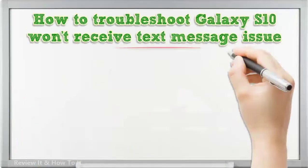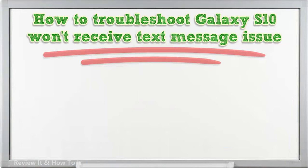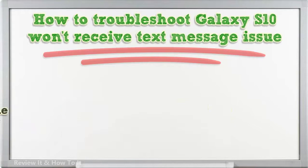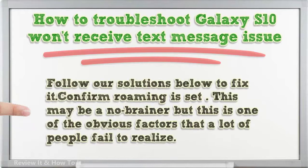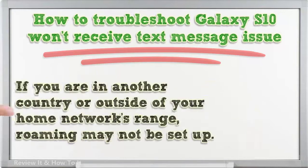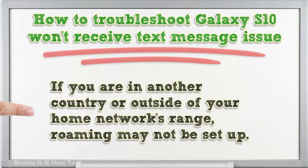How to troubleshoot Galaxy S10 won't receive text message issue. There's a number of possible causes for this problem. Follow our solutions below to fix it. Confirm roaming is set. This may be a no-brainer but this is one of the obvious factors that a lot of people fail to realize. If you are in another country or outside of your home network's range, roaming may not be set up.